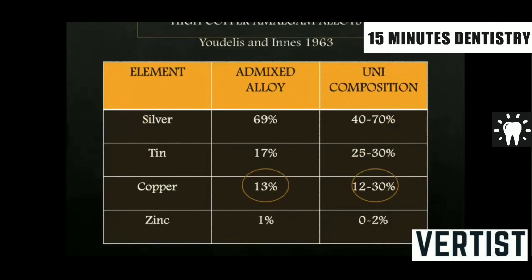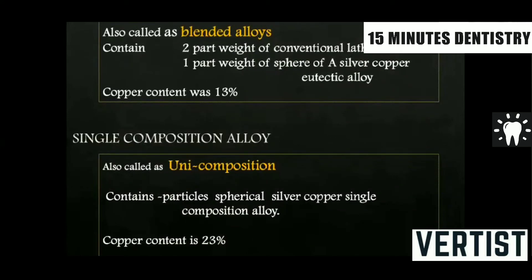So high copper amalgams were introduced in 1963, with increased copper content. Two alloys came in: the admixed high copper alloy and the unicomposition high copper alloy. In the admixed type, it is a blended alloy — two parts conventional lathe-cut and one part spherical silver-copper eutectic alloy — with copper content around 13%. In the single composition alloy, all particles are spherical, made up of silver-copper alloy, and the copper content is very high at 23%. This is important because the setting or amalgamation reaction changes according to the constituents.